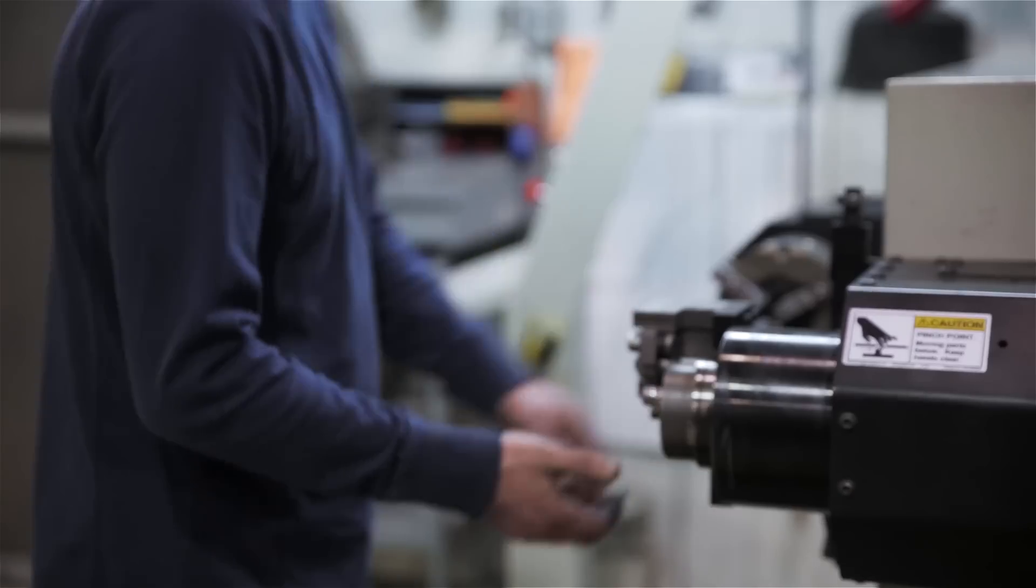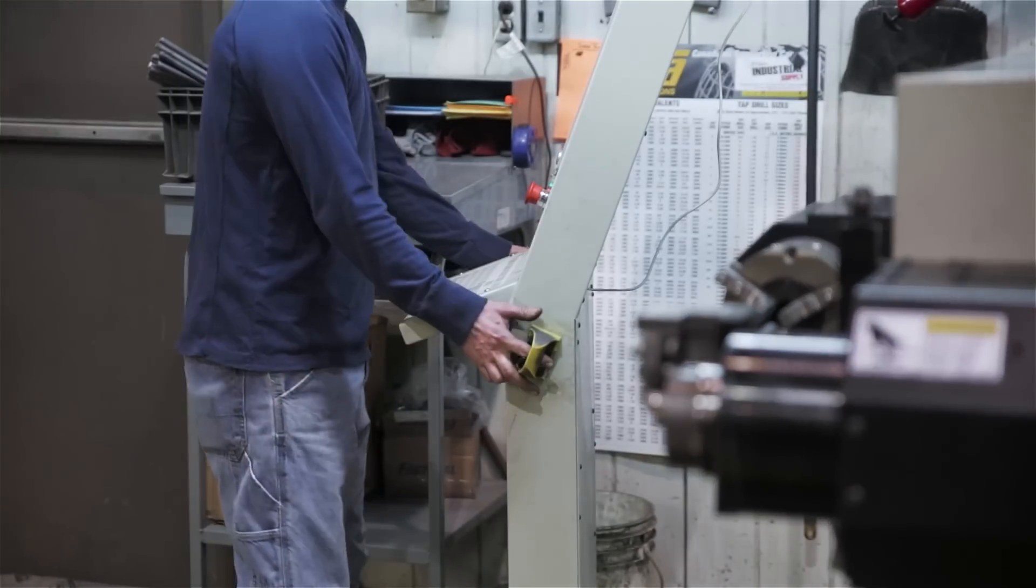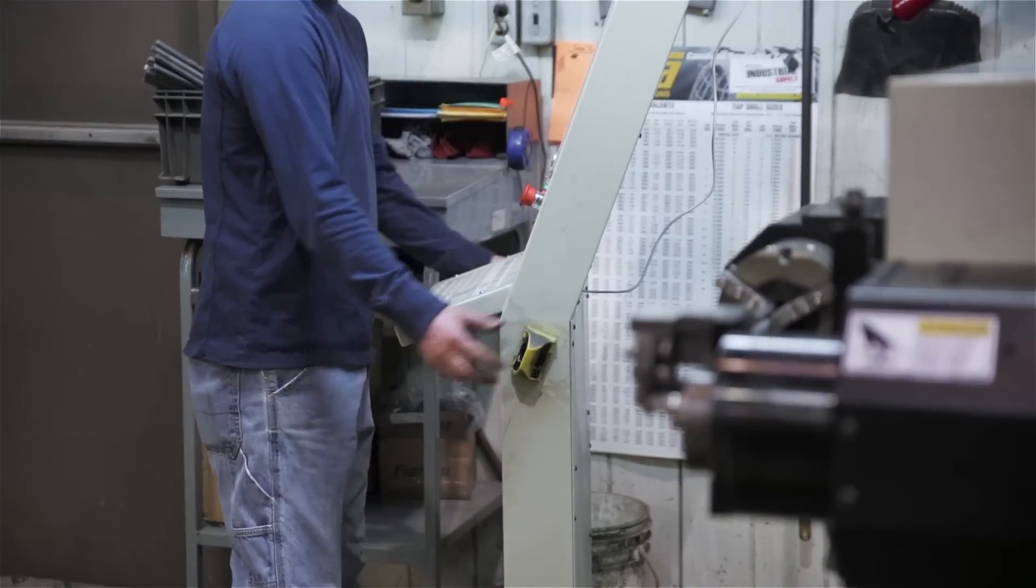We also invested in a CNC wire bender. The benefits of that machine are that it can bend high volume repeatable hangers for hanger clamps and pipe hangers over and over.